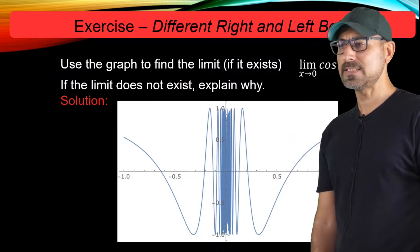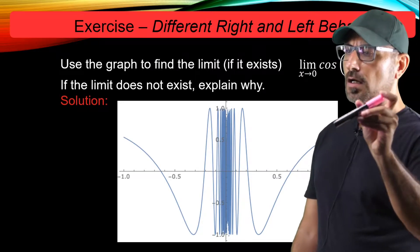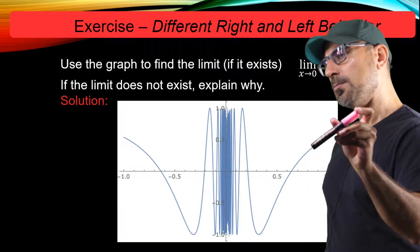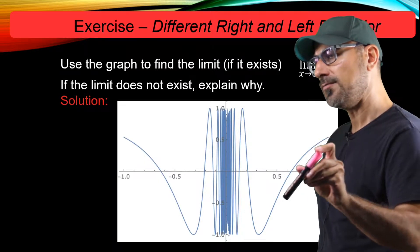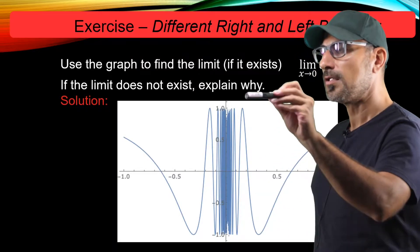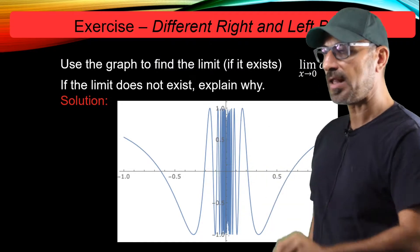And the same deal happens when you walk on the blue line on the right-hand side of 0. As you see, when you get closer to 0, the graph starts fluctuating.